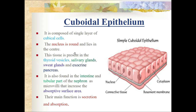Cuboidal epithelium is composed of a single layer of cubical cells arranged in a single layer. The nucleus is round and lies in the center.